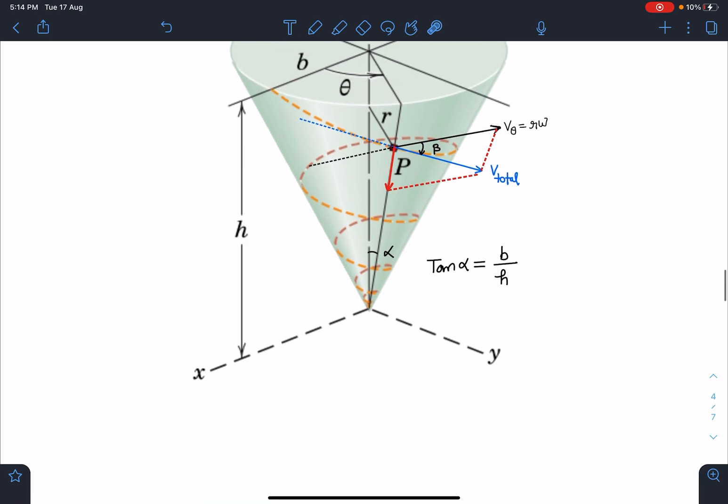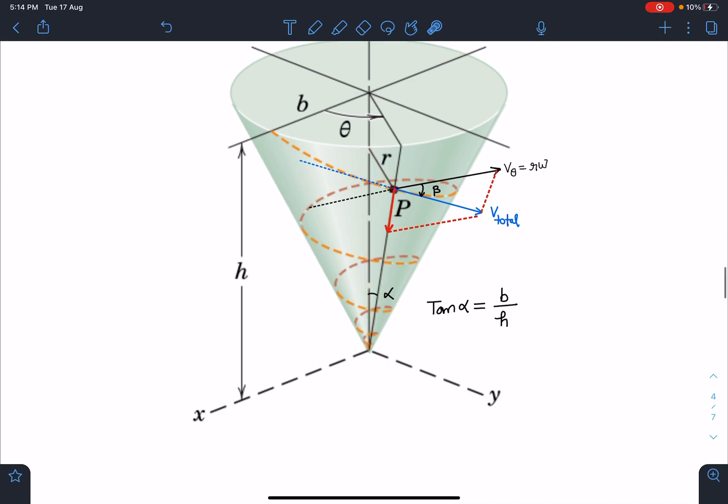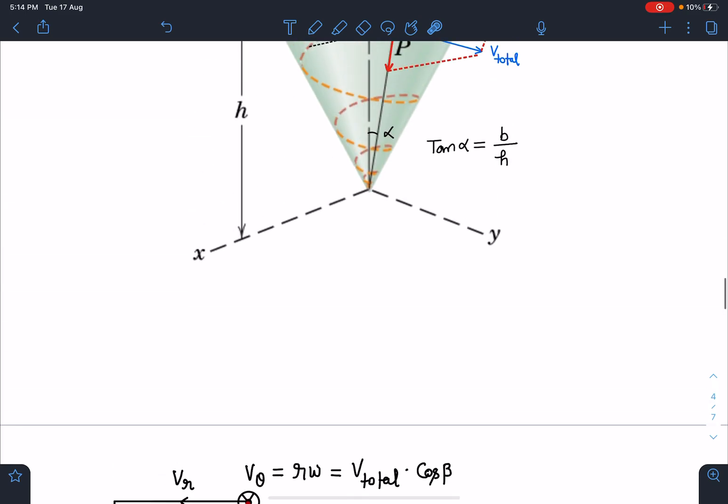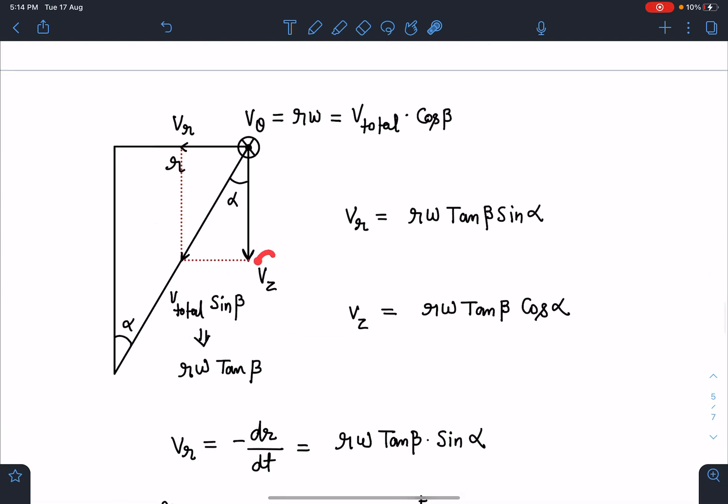Here is the diagram from this view. The other component of V_total which is along the cone surface will be pointing in this direction - that's V_total sin β. One component is along the Z direction which reduces the height h, so I'm calling it V_Z. There's another component V_R which reduces the radius r.